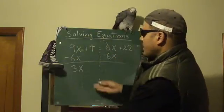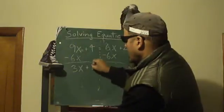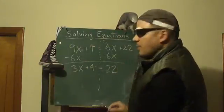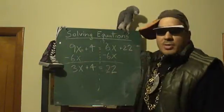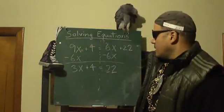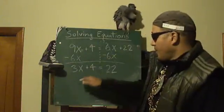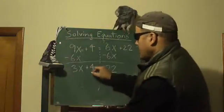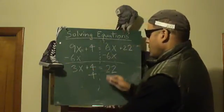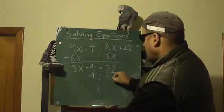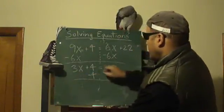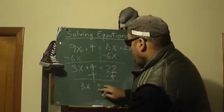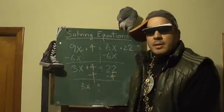We bring everything else down: we have 3x plus 4 equals 22. Now we want to get x by itself on this side. We want to get rid of the 4 — minus 4. We subtract 4 from this side as well. This is gone. We're left with 3x equals 22 minus 4, which is 18.